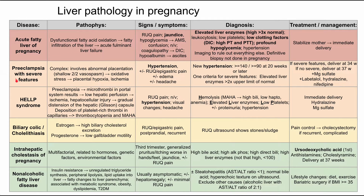Next is preeclampsia with severe features. The pathophysiology of preeclampsia is complex — it involves abnormal placentation. When the placenta attaches, there are spiral arteries that form, and in preeclampsia the arteries are shallow, secondary to vasospasm or vasoconstriction. This results in oxidative stress, which can then result in placental hypoxia and ischemia.